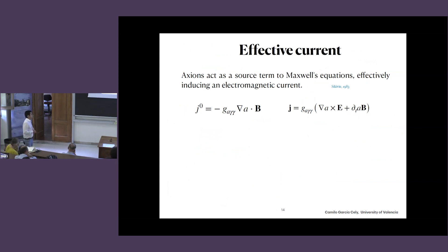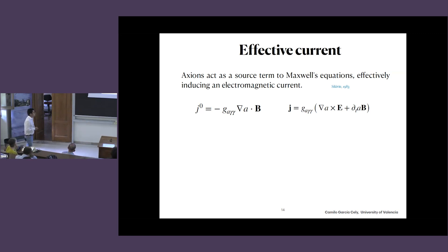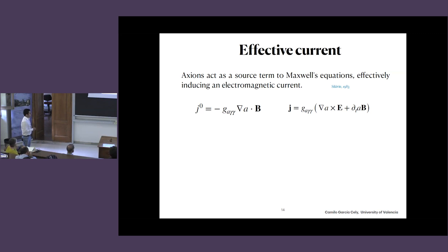How does it work in practice? An axion acts as a source term to Maxwell's equations. You can think of an effective current induced by the axion, and this effective current creates electromagnetic effects. This is not a real current — it's not something made of electrons and protons. It's just a description of what the axion can do in terms of electromagnetic effects.